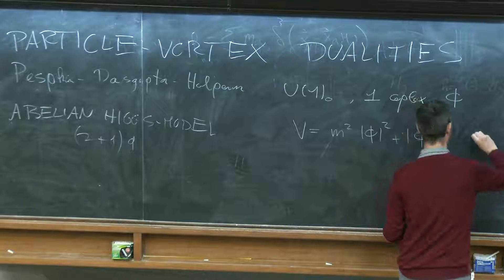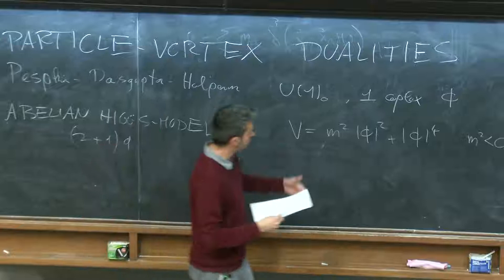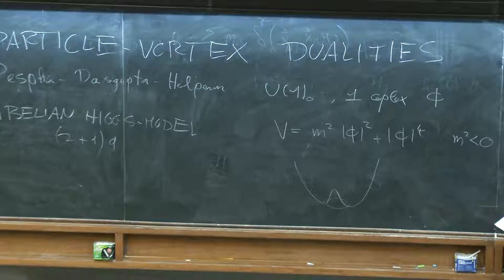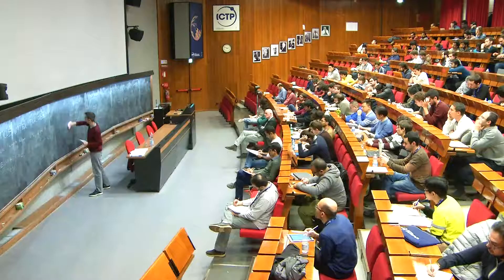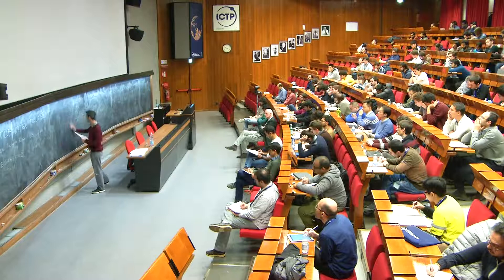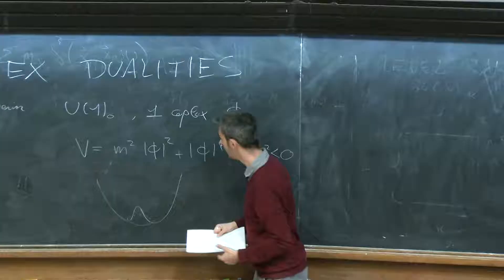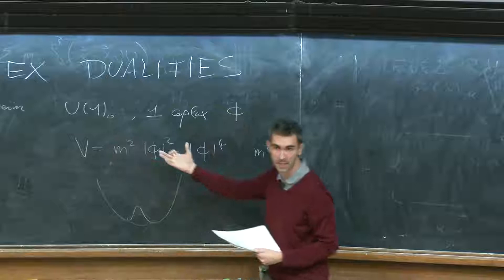We take this mass large and can do a classical analysis. Since this is the Mexican hat potential, there is symmetry breaking because phi condenses. Since this symmetry is gauged, this is the Higgs mechanism and the system is gapped.